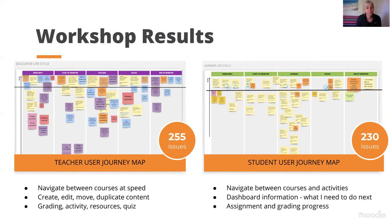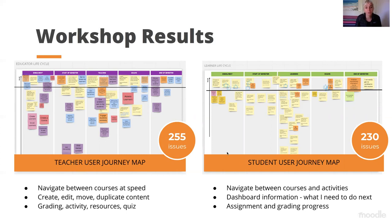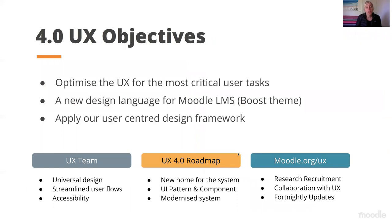The results from the user journey map gave us key themes around the teacher journey: difficulty navigating between courses at speed, moving content around more easily, and grading — activity resources and quiz also coming up as friction areas. The student journey map highlighted that navigating between courses wasn't as easy as it should be, and students really just need to know what to do next, especially from their dashboard. Also, making assignment and grading progress a lot more clear and intuitive for them.